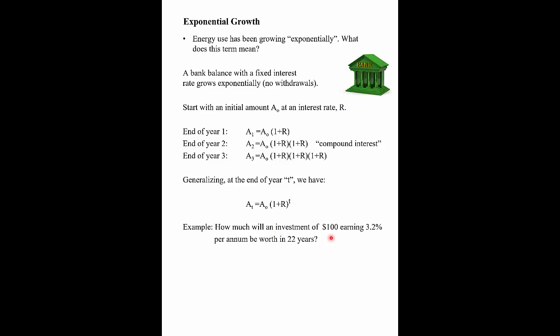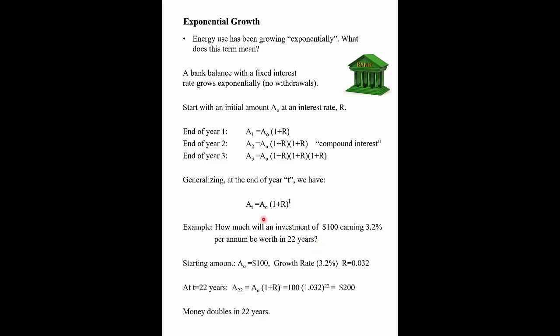For example, how much would an investment of $100, if it earned 3.2% per annum, be worth in 22 years? I've sort of rigged this example. We take our formula: A0 is $100, R is 0.032. So 1.032 raised to the power of 22, times 100. I picked this so that it works out almost exactly to $200. So at an interest rate of 3.2%, your money — whatever balance you put in — will double every 22 years.